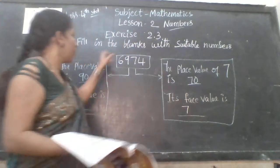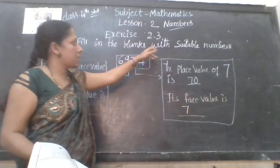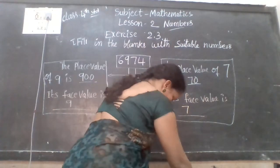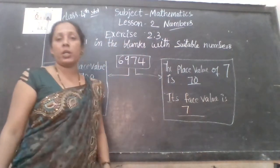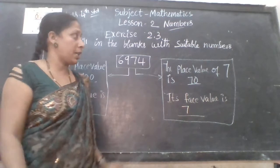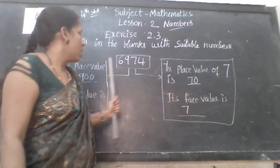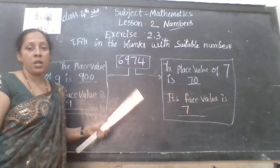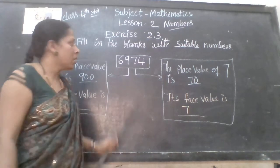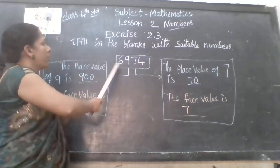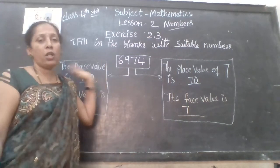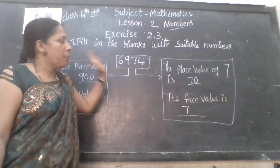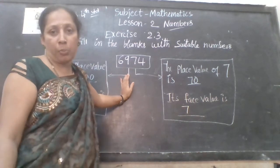See here, they have given fill in the blanks with suitable numbers. They have given blanks — you have to fill with suitable numbers with the correct answer. What is the question? See properly. They have given one number. You have to find the place value and face value of the given number.